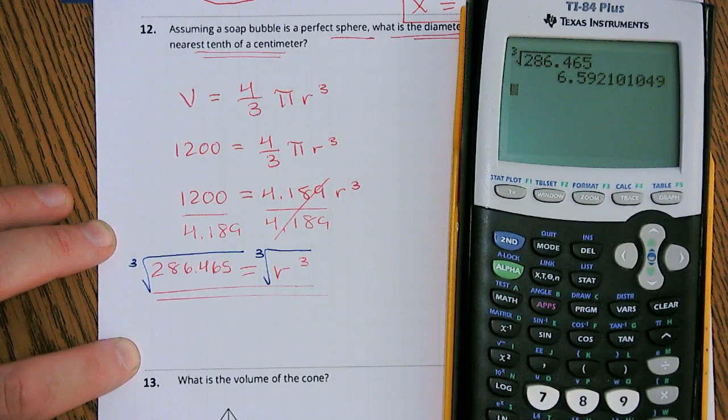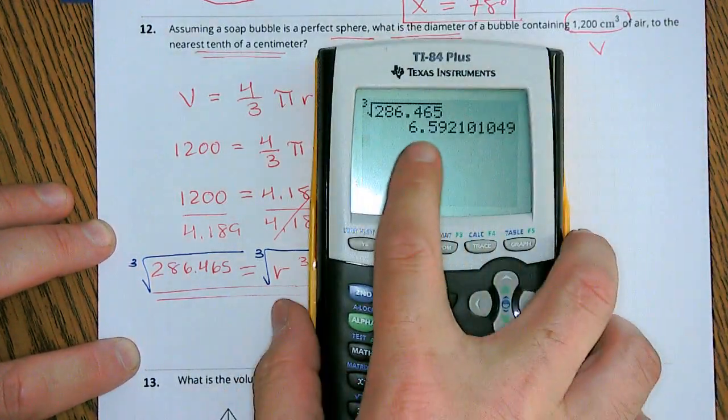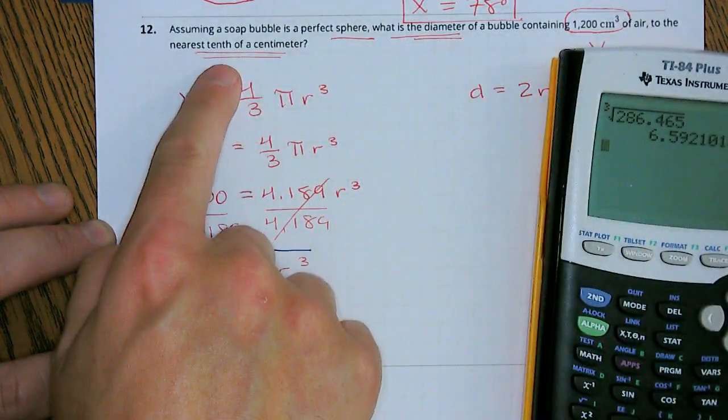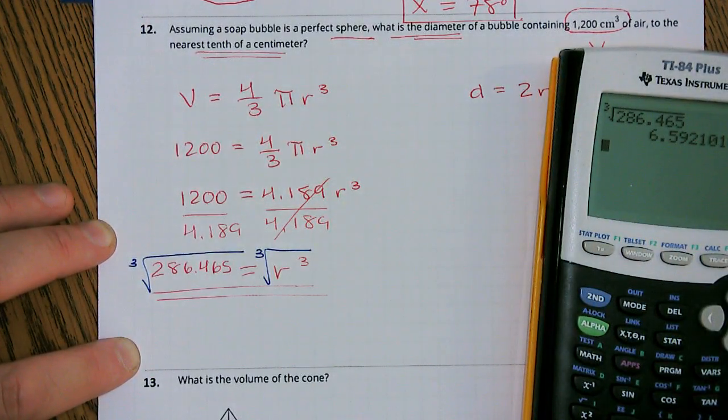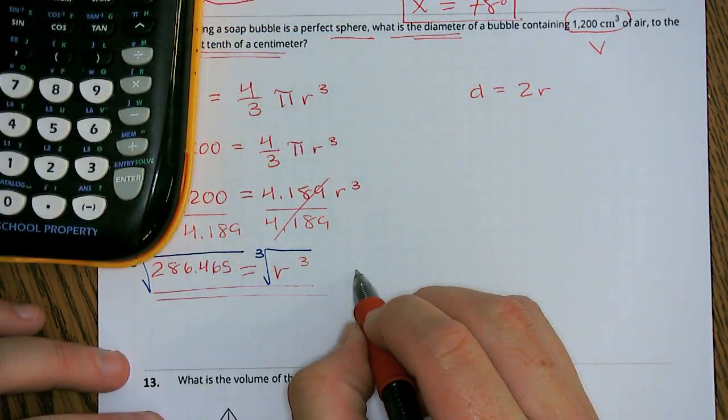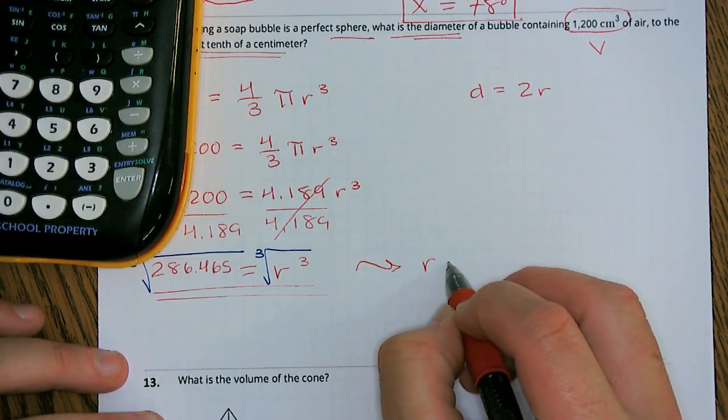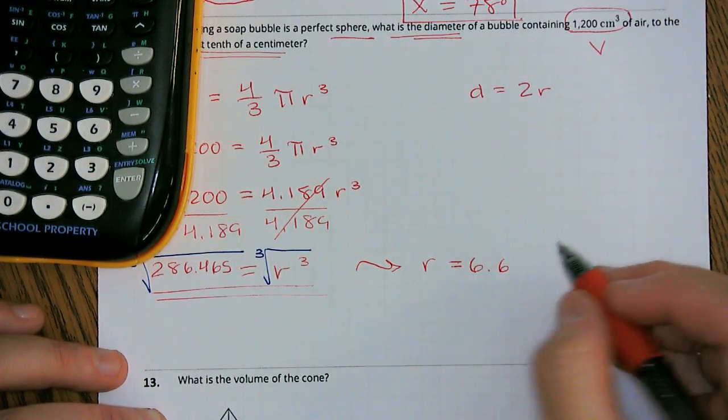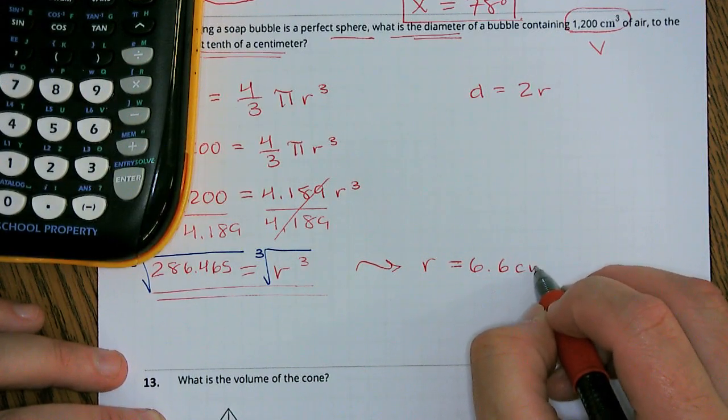And we're going to get approximately, looks like 6.59 or 6.6, because they told us it's the nearest tenth of a centimeter. So our radius, this is our radius now. So that tells us that our radius is approximately 6.6 centimeters.